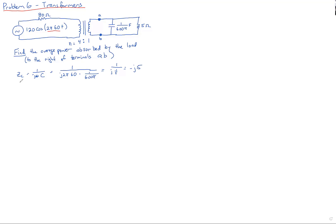Next is the impedance of the entire load. The load looks like the capacitor with impedance −j5Ω in parallel with the resistor with impedance 5Ω. So Z_load = 5 ∥ (−j5). Using product over sum, the product is −j25 and the sum is 5 − j5, giving us 2.5 − j2.5Ω in rectangular form.